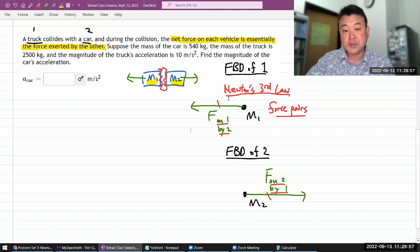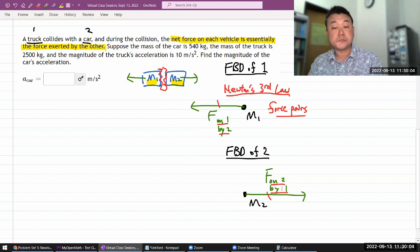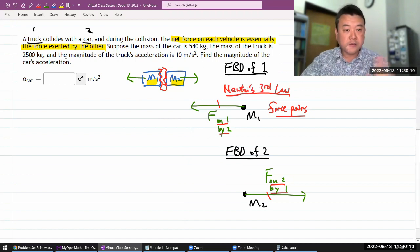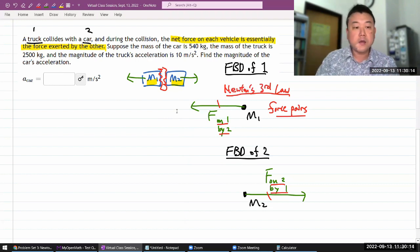Once you identify them as action-reaction force pairs, Newton's third law gives you a license to say that these two forces are equal in magnitude and hopefully you already drew them as opposite interactions. That's how you use Newton's third law. Once you have that, I think the rest of the question will give me enough information.